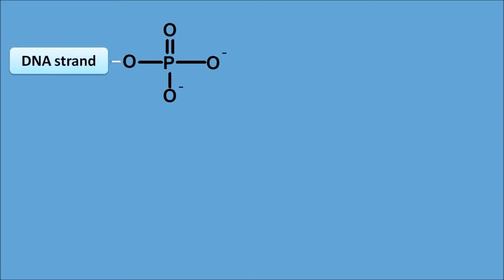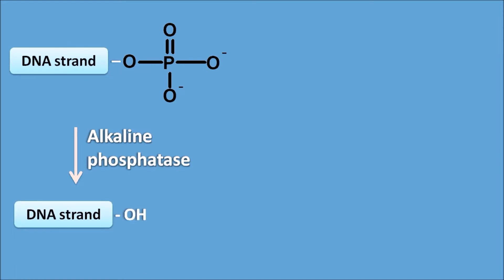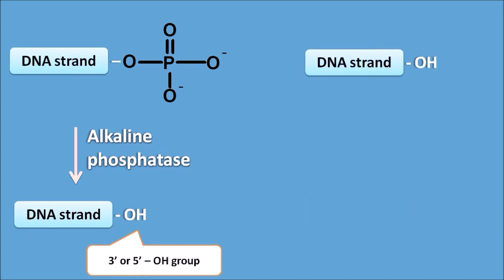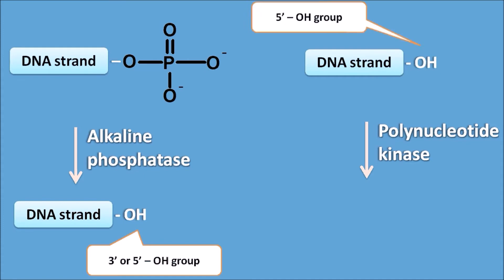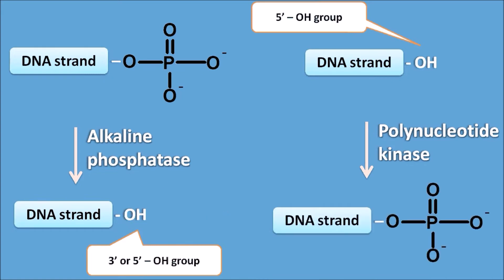Next, for alkaline phosphatase: a DNA strand with a free phosphate group has that phosphate cleaved by alkaline phosphatase, producing a free OH group on the DNA strand. The OH group produced may be either a 3- or 5-OH group. On the other hand, polynucleotide kinase acts on a DNA strand having a free 5-OH group, converting it to a 5-phosphate end. So polynucleotide kinase adds the phosphate group and alkaline phosphatase removes it.